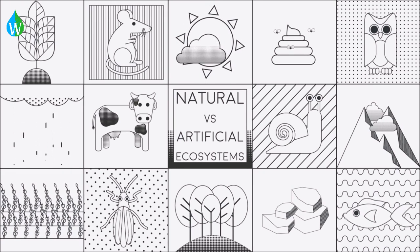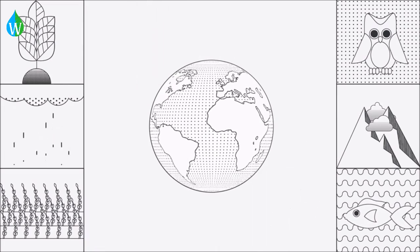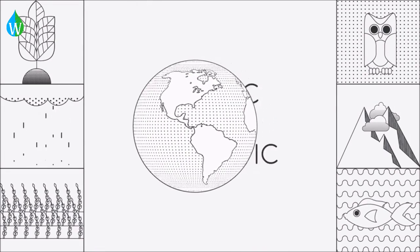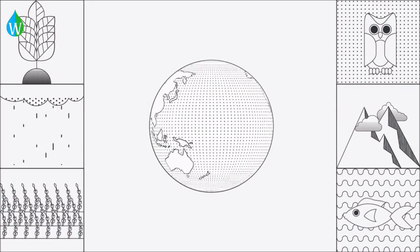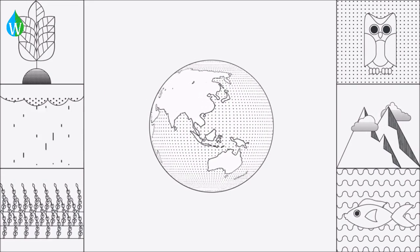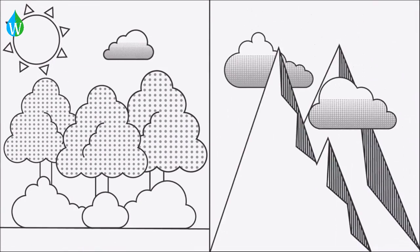An ecosystem can be defined as a large, highly interconnected area of the planet that is composed of several different biotic and abiotic components. A good example of an ecosystem would be an entire forest or a mountain range.